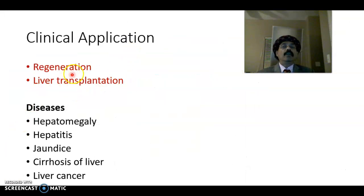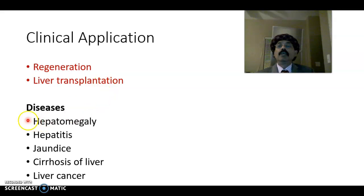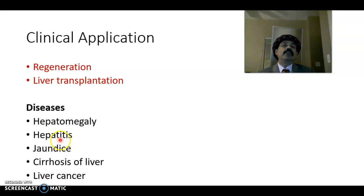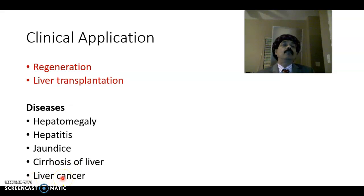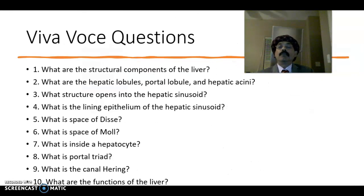For clinical applications: the liver has the capacity to regenerate — around 75% of the liver may be removed but the liver will regrow. Liver transplantation is a common practice. Diseases include liver enlargement due to parasitic infection or malaria, viral hepatitis, jaundice due to excessive breakdown of RBCs, cirrhosis of the liver due to breakdown of parenchymal cells in alcoholics, and liver cancer involving hepatocytes or cholangiocytes.